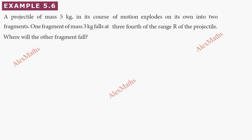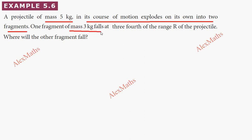Hi students, this is Alex here. In this video, for example, problem 5.6: a projectile of 5 kg, during its course of motion, explodes on its own into two fragments. One fragment has a mass of 3 kg and it falls at three-fourths of the range R of the projectile. Where will the other fragment fall?